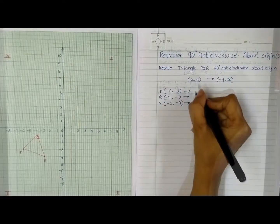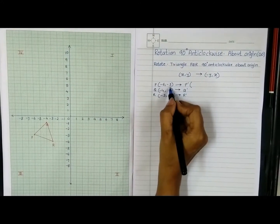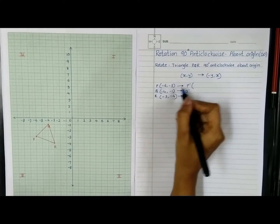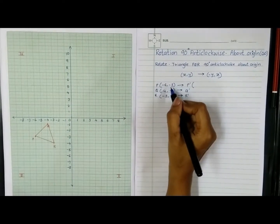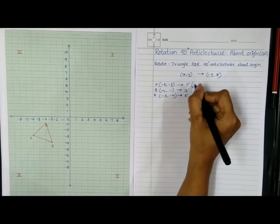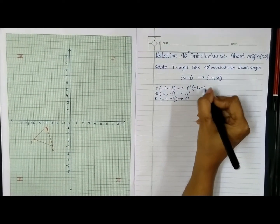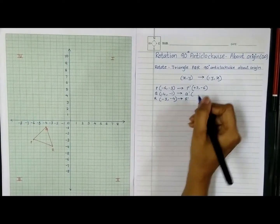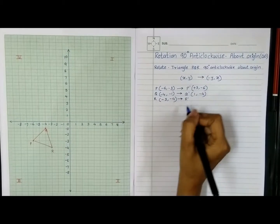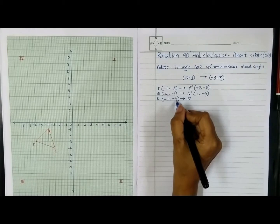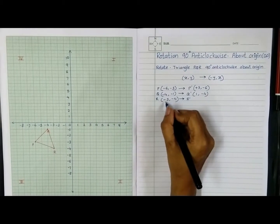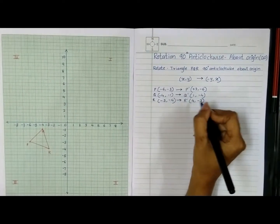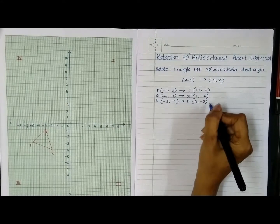Applying the formula to get the new coordinates: for P(-6, -3), we flip to get -3 on the left — it's already negative so it becomes positive 3 — giving P'(3, -6). For Q(-4, -1), flipping gives Q'(1, -4). For R(-3, -4), flipping gives -4 on the left which becomes positive 4, giving R'(4, -3).